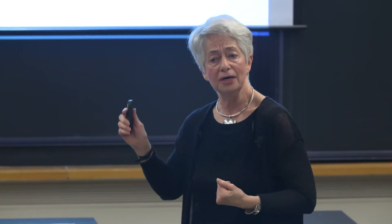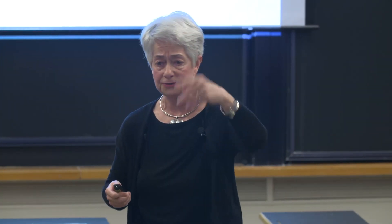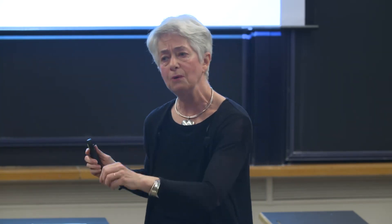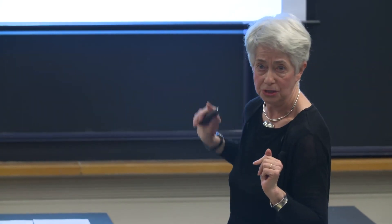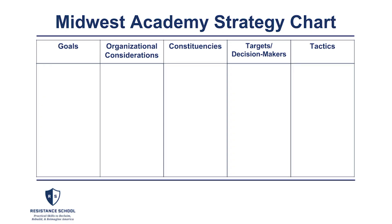The next are either decision makers or targets. It's not the same as enemies. We may have lots of enemies — the Koch brothers and others — but they may not have the power to give us what we want. That's what decision makers and targets is: who can give us those goals we mentioned in the first category? And the last are tactics: what are all the actions you can take in order to influence the decision makers, recruit and support those constituencies, and strengthen the organization to win your goals?